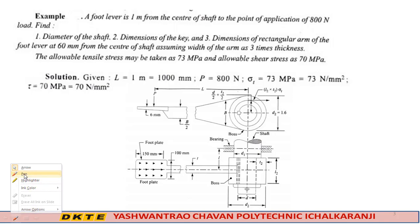The diameter of the shaft is to be calculated. The dimensions of the rectangular arm of the foot lever are at 60 mm from the center of the shaft. The width of the arm is three times the thickness.